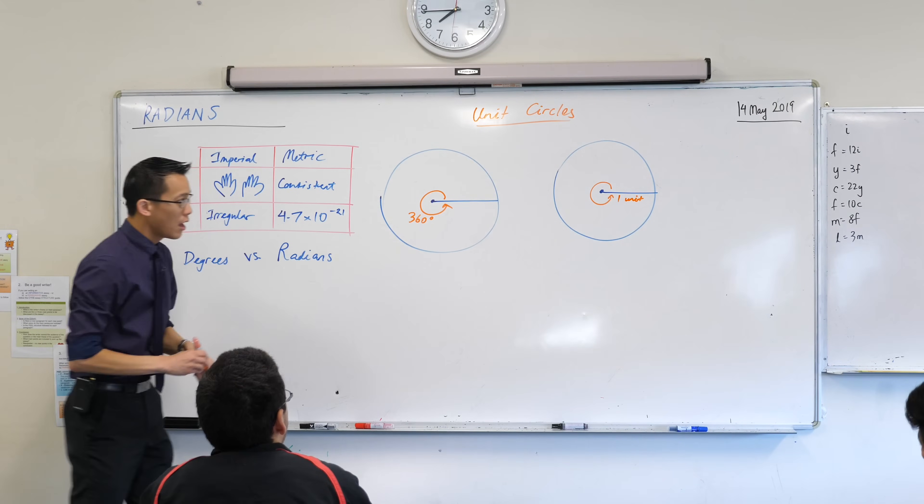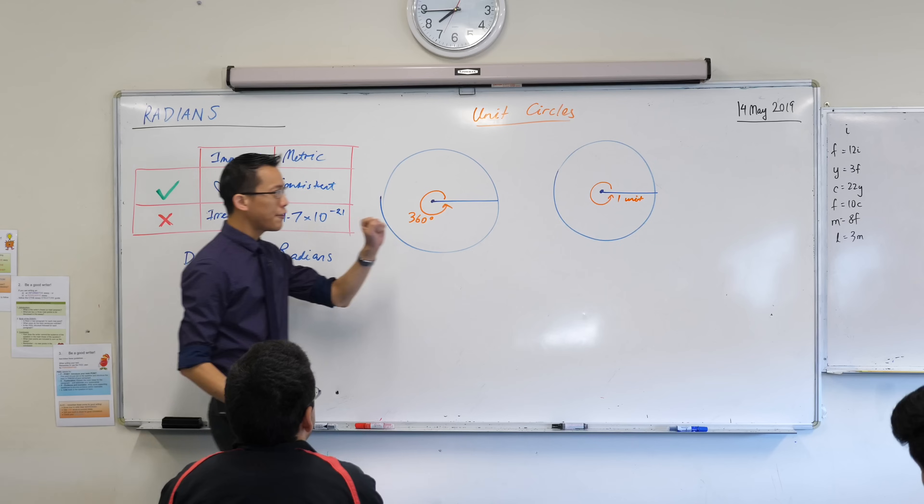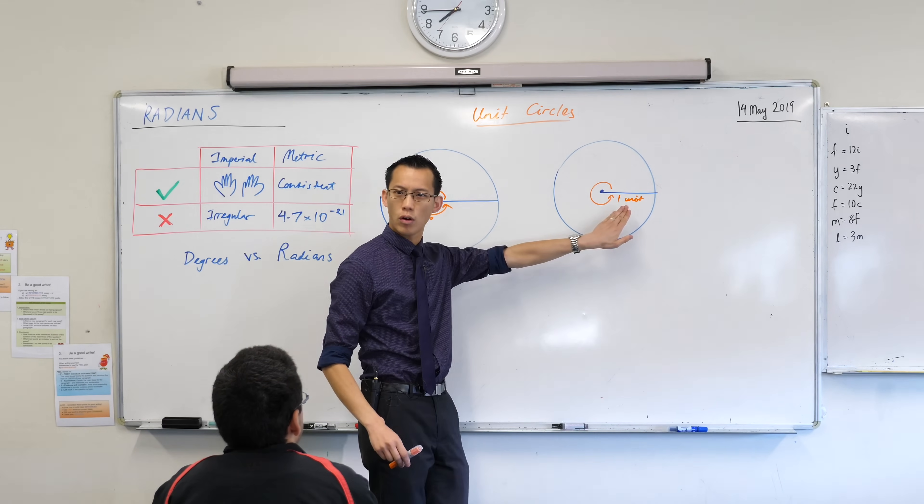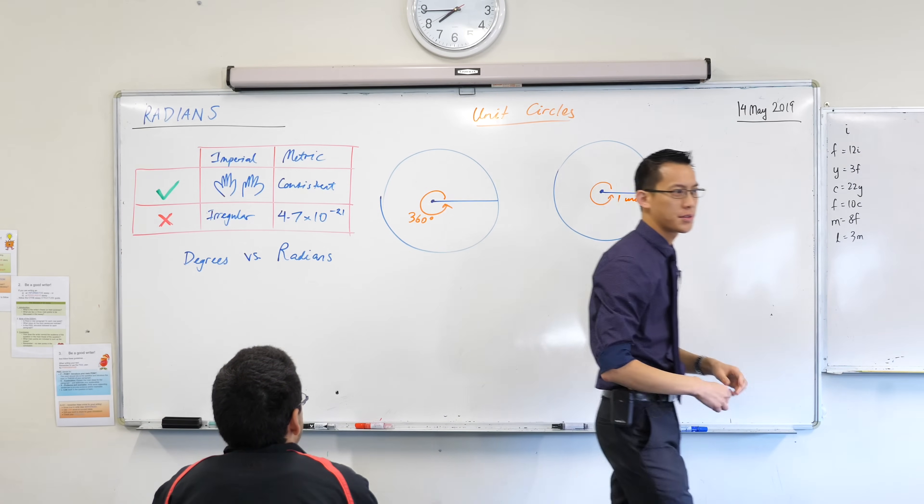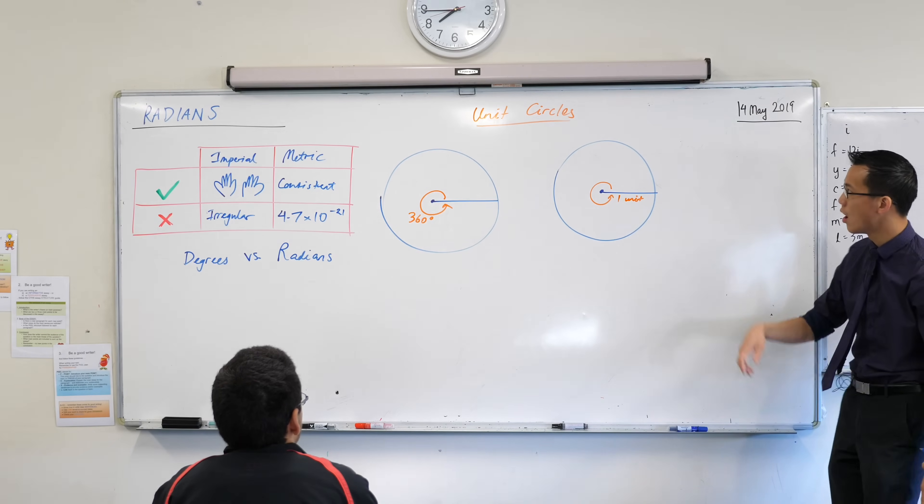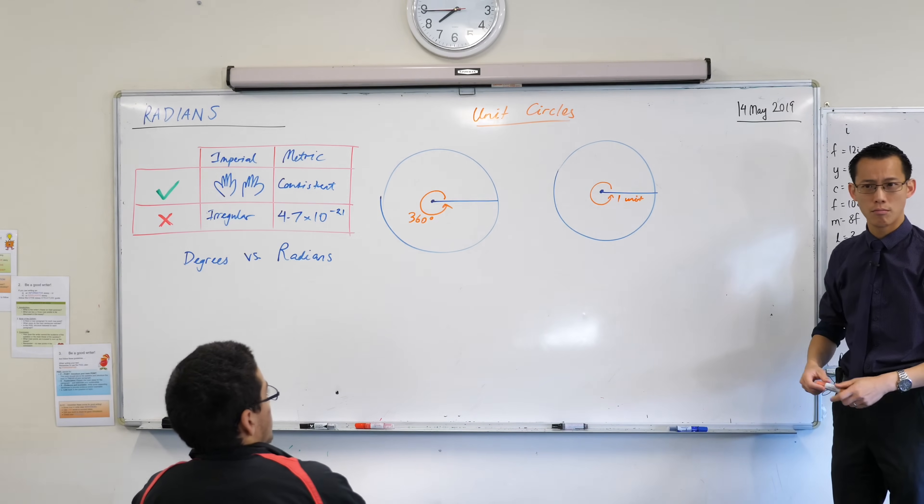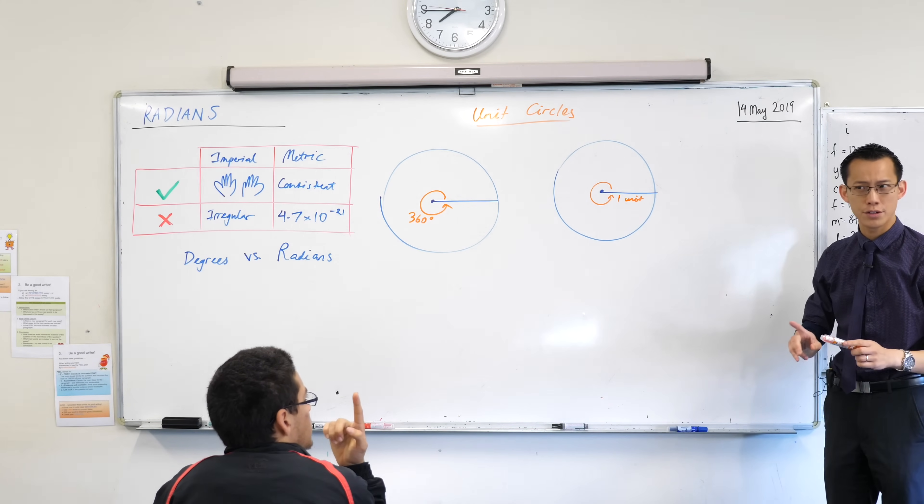Now, I want you to think about this carefully with me. If the unit circle has a radius of one unit, what is its circumference? What is the circumference of the unit circle? Think about it for a second.